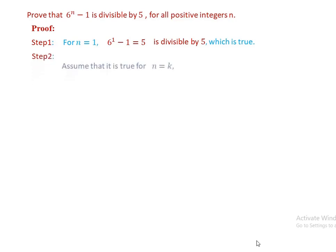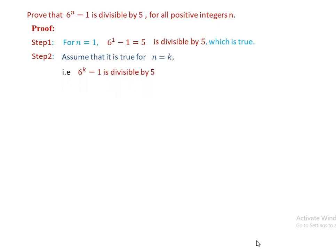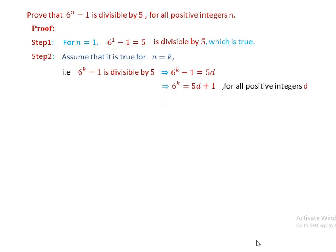Step 2, the inductive assumption: let us assume it is true for n equal to k. This implies that 6 to the power of k minus 1 is divisible by 5. This implies 6 to the power of k minus 1 is equal to 5 times d. Rearranging, we have 6 to the power of k equal to 5d plus 1 for all positive integers d.